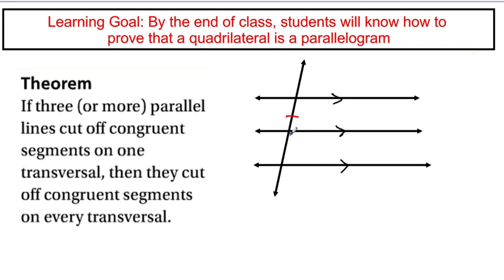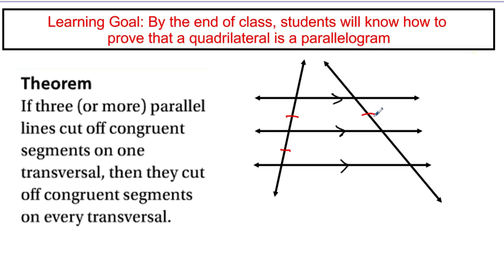We measure the space between the parallel lines — from this point to this point — and get the same distance between the other pair of parallel lines. If those two distances are equal, then any other transversal drawn through those three parallel lines will also have equal spacing between the parallel lines. The spacing on any transversal won't necessarily equal the others, but it will be equal within itself.